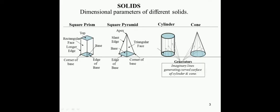For the cylinder, this is the base. For the cone, this is the apex and this is the base surface. Now we will solve one problem based on projections of the square prism.